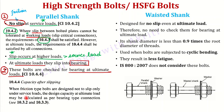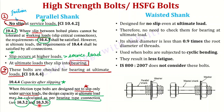Clause 10.4.4 tells us about capacity after slipping. It says when friction type bolts are designed not to slip only under service loads, the design capacity at ultimate loads may be calculated as per bearing type connection — as defined in clauses 10.3.2 and 10.3.3.3. This is all about parallel shank bolts. And importantly, IS 800-2007 only recommends parallel shank bolts.